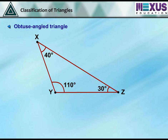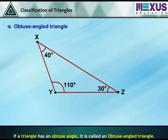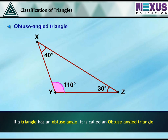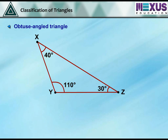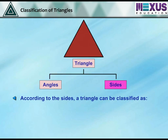Obtuse angle triangle. In the given figure, triangle XYZ is an obtuse angle triangle as angle XYZ is equal to 110 degrees.